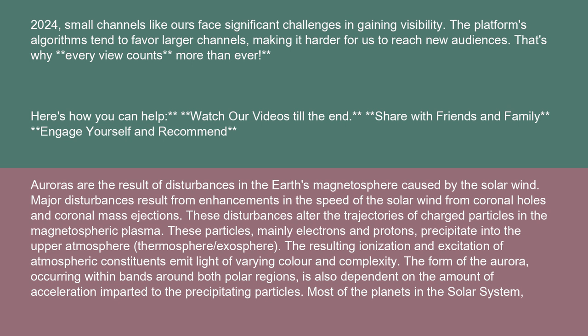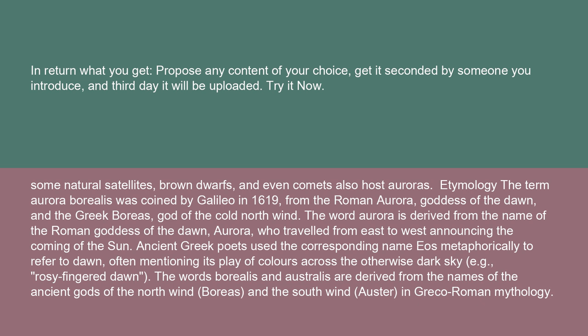Auroras are the result of disturbances in Earth's magnetosphere caused by the solar wind. Major disturbances result from enhancements in the speed of the solar wind from coronal holes and coronal mass ejections. These disturbances alter the trajectories of charged particles in the magnetospheric plasma. These particles, mainly electrons and protons, precipitate into the upper atmosphere (thermosphere/exosphere). The resulting ionization and excitation of atmospheric constituents emit light of varying color and complexity. Most planets in the solar system, some natural satellites, brown dwarfs, and even comets also host auroras.